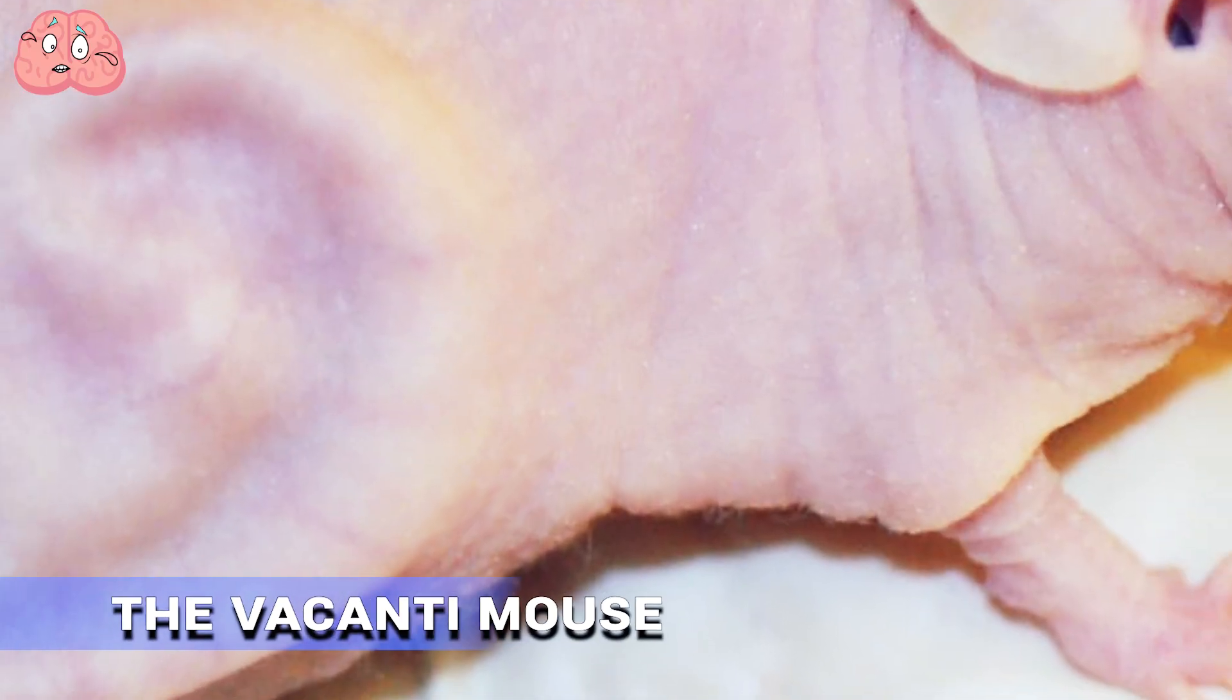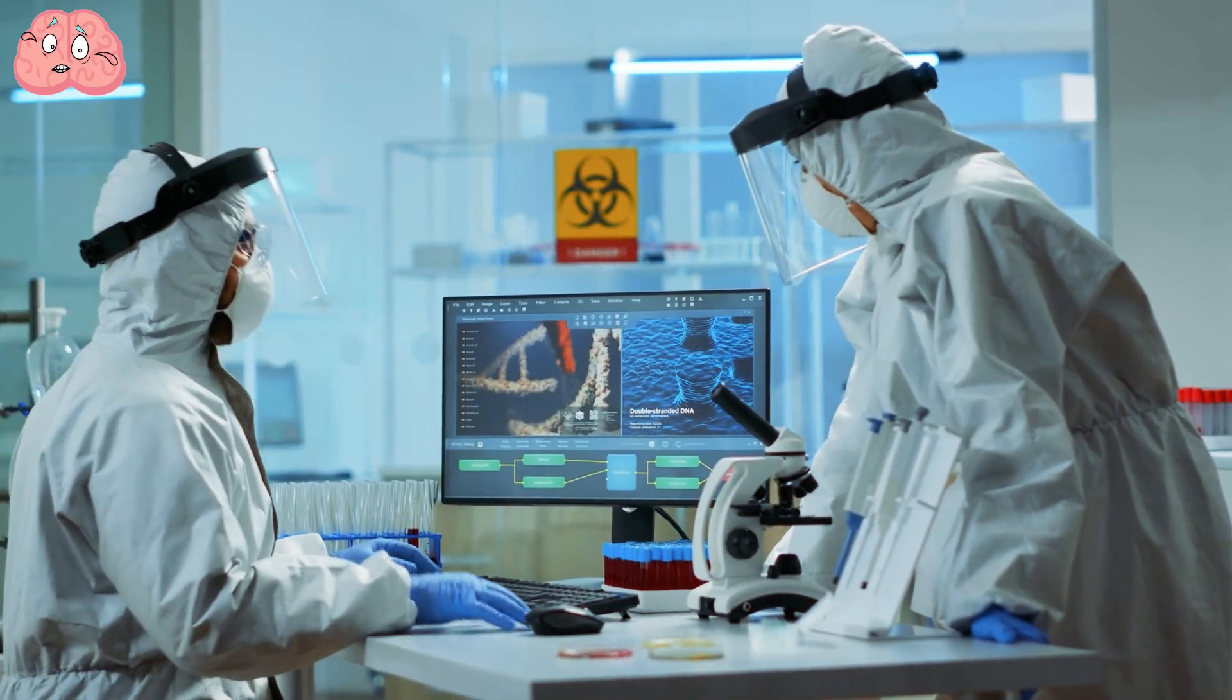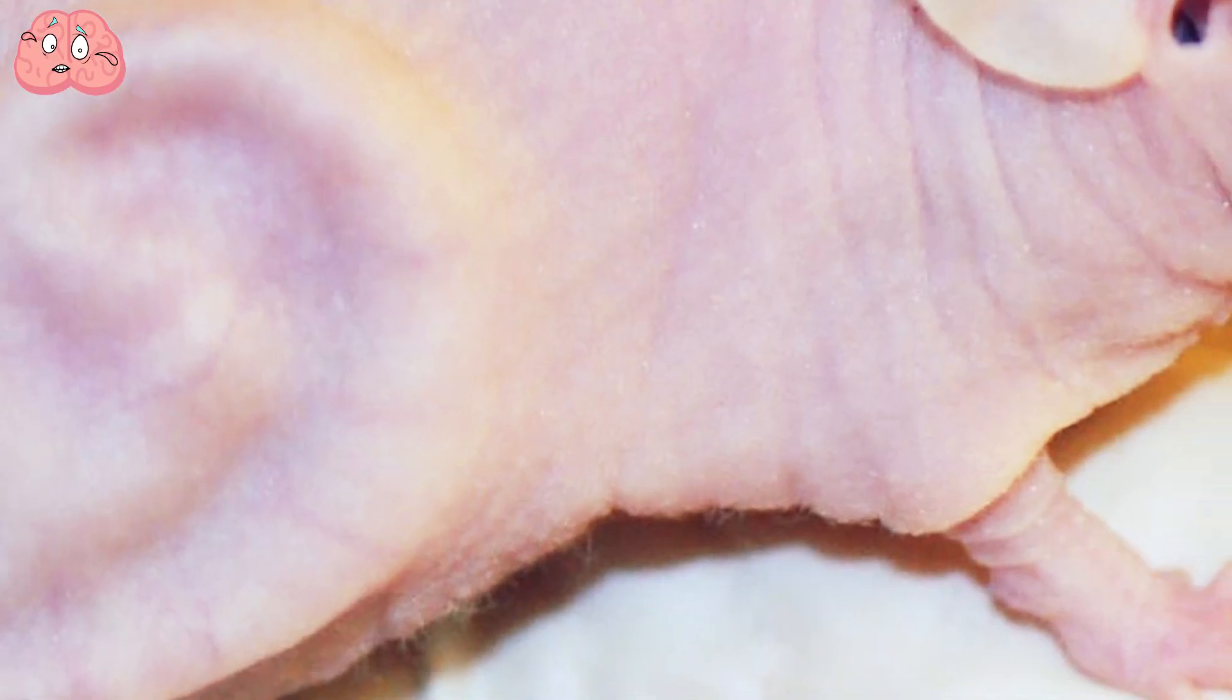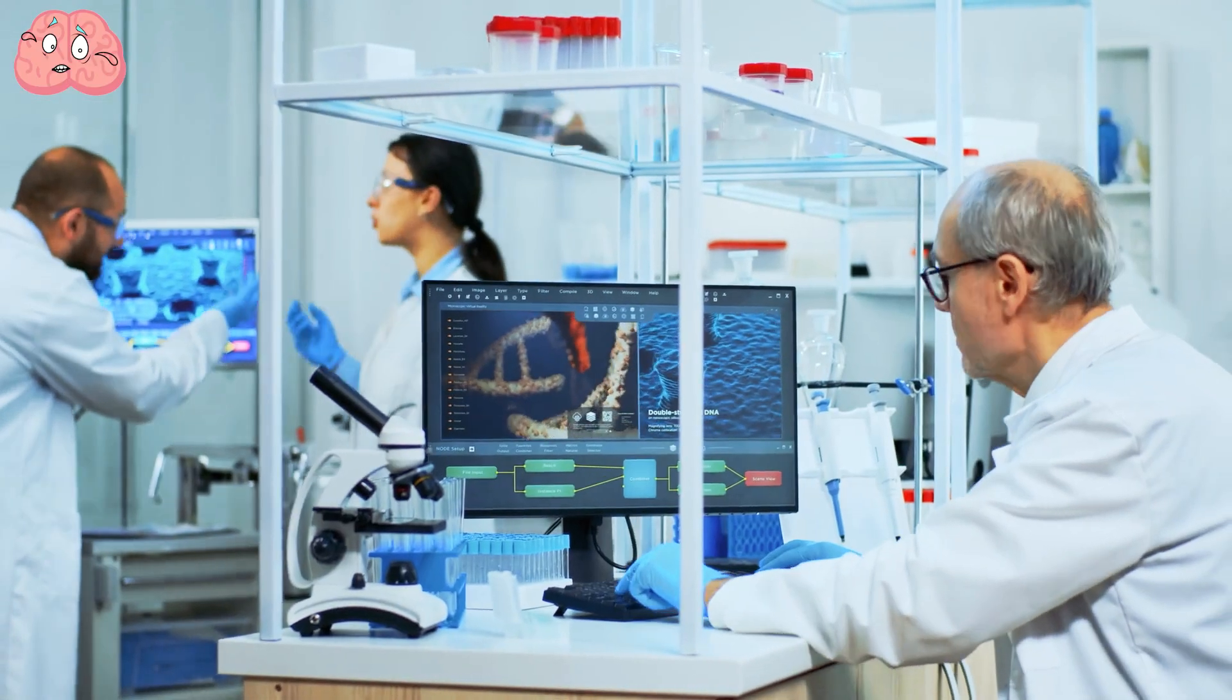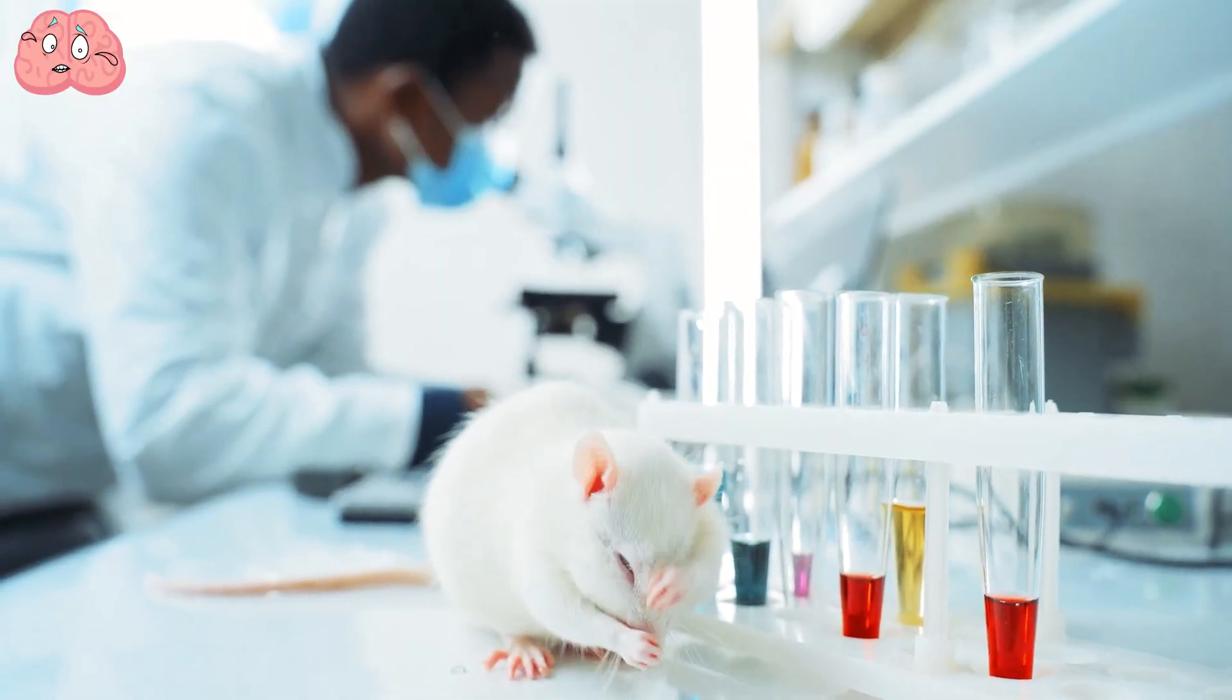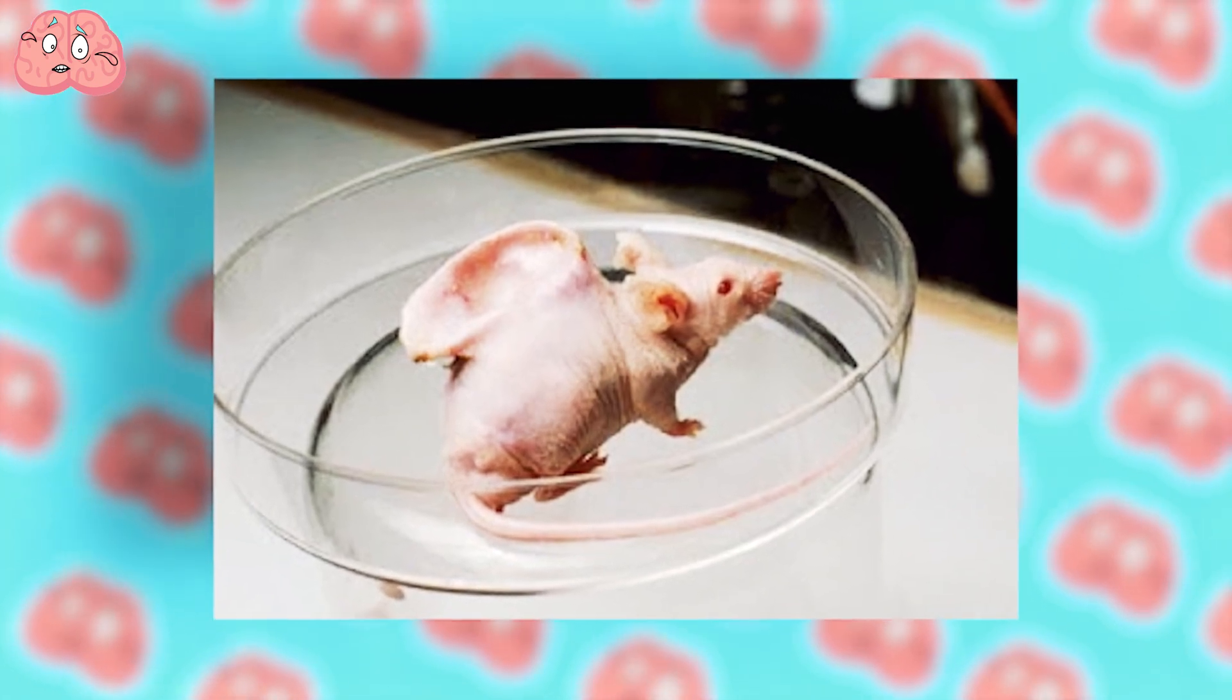The Vacanti Mouse: Charles Vacanti, a researcher at the University of Massachusetts Medical School, became well-known for his creation of an extraordinary mouse. The Vacanti Mouse looks like a typical mouse, but it has a human-like ear on its back, which Vacanti achieved by implanting cow cartilage cells into a biodegradable, ear-shaped mold that was then placed under the mouse's skin. The mold was positioned in such a way that the mouse's blood would nourish the artificial ear and allow it to take shape as the cartilage grew. Once the cartilage was fully developed, the mold decomposed, leaving only the ear on the mouse's back.